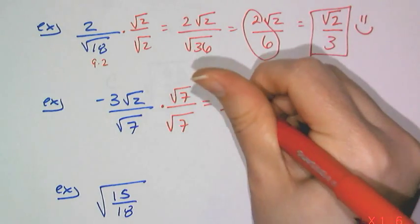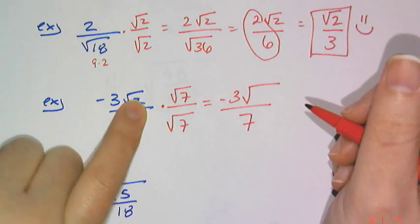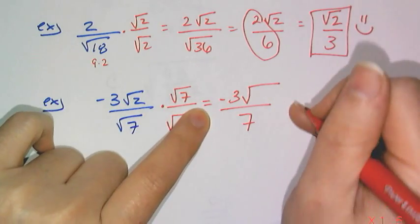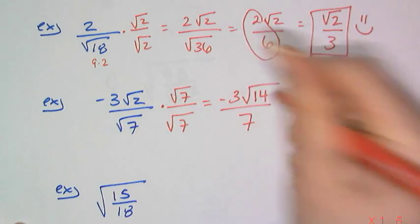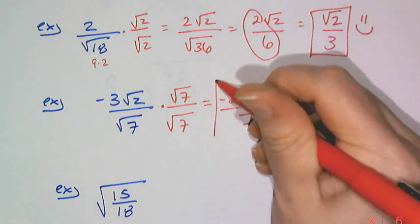Well, I get a negative sign of 3, and then I have to multiply 2 times 7, and put it under the radical, and I get 14. And that's a simplified version.